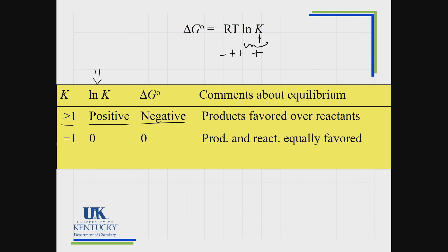If K is equal to 1, then the natural log of K is zero, and delta G would therefore be zero. Under standard state conditions, if delta G is zero, it happens to be at equilibrium when everything is at one atmosphere — very rare, but it might happen.